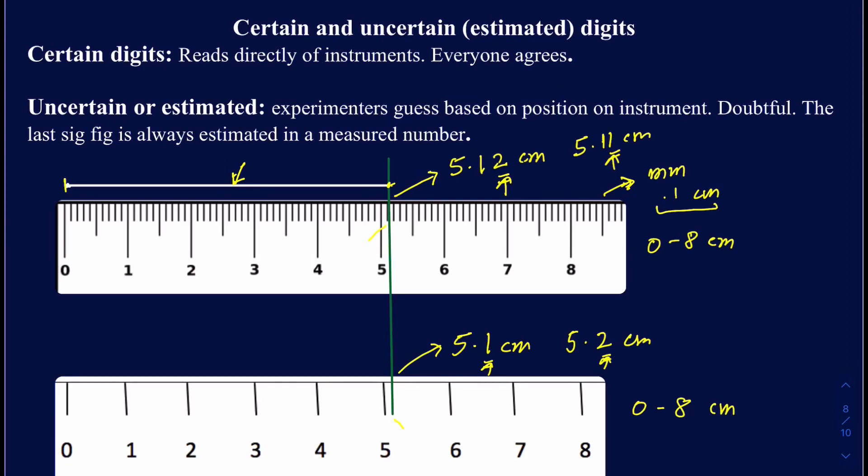Make sure you always read everything off the instrument first, and then you should have one extra digit coming from your mind — that's your estimated digit. This is the case for everything, whether you're reading a beam balance or reading volume from a graduated cylinder.